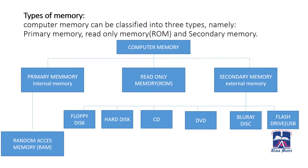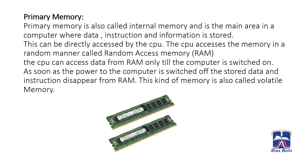Primary memory is also called internal memory and is the main area in a computer where data, instructions and information are stored. It can be directly accessed by the CPU. The CPU accesses memory in a random manner, called RAM — random access memory. The CPU can access data from RAM only while the computer is switched on. As soon as the power is switched off, the stored data and instructions disappear from RAM. This kind of memory is called volatile memory.